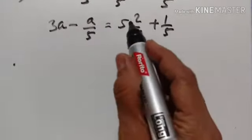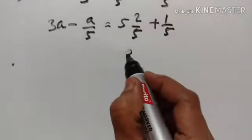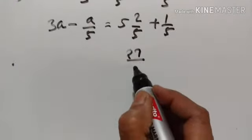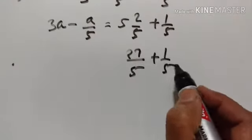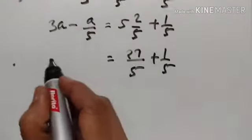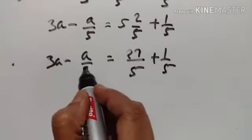5 as a whole gives 25. 25 plus 2 is equal to 27. So we have 27 upon 5 plus 1 upon 5 is equal to 3A minus A upon 5.